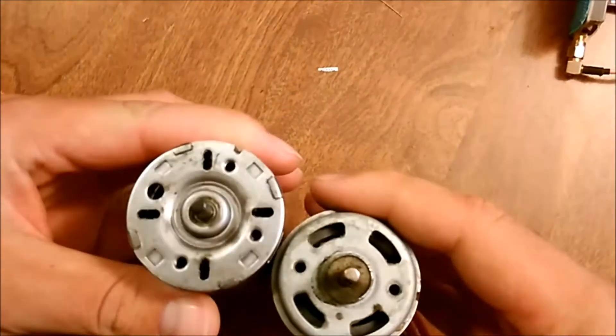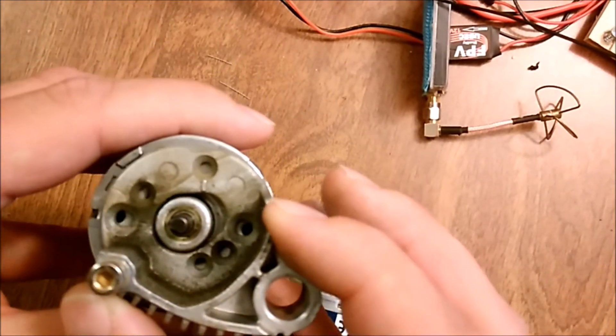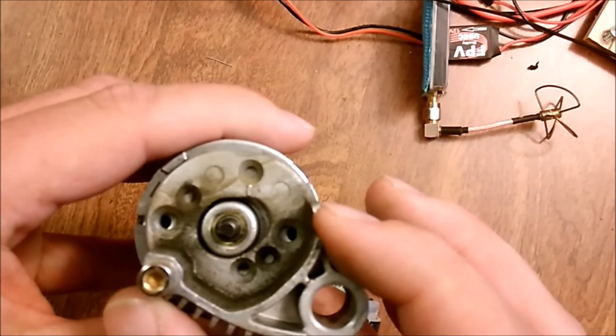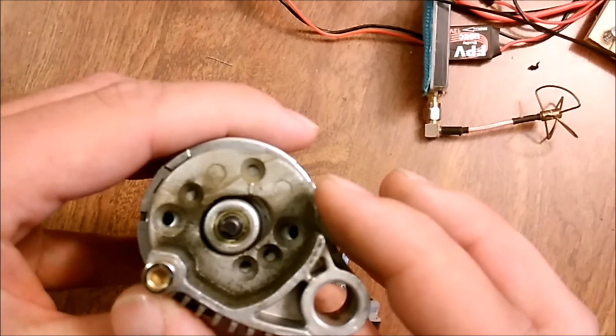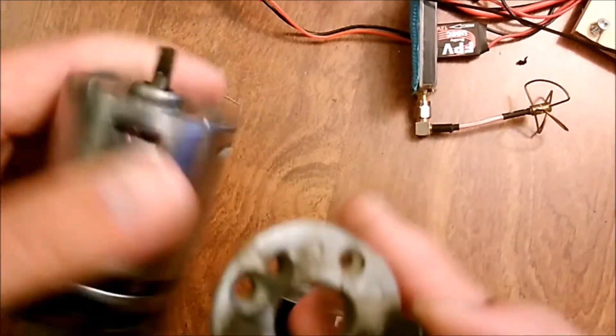Okay, on the stock motor mount the holes, as you can see here, are just a little bit too close together. So I'll probably get a drill bit or my Dremel or something and widen out the holes, and then we'll be able to mount it.